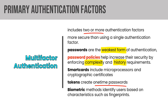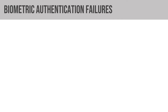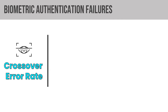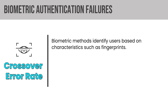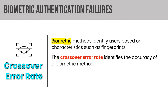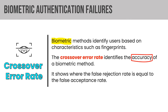Biometric methods identify users based on characteristics like a fingerprint or retina scan. You need to know the crossover error rate and its two components. The crossover error rate identifies the accuracy of a biometric method — it's the point where the false rejection rate equals the false acceptance rate. This actually came up on the exam and you'll need to memorize it, as it's not something you'll know intuitively.